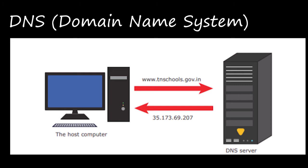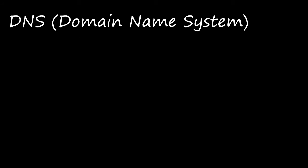American computer scientist Paul V. Mockapetris, together with John Postel, invented the Internet Domain Name System. John Postel was the administrator of the Internet Assigned Numbers Authority (IANA), and until his death he was known as the 'god of the internet.' Their images are given in your textbook on page 163 — do go through that section.